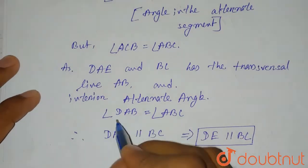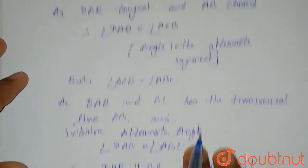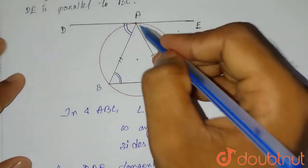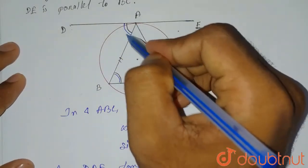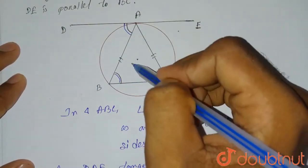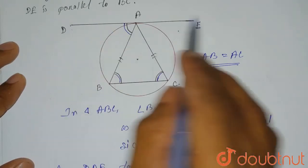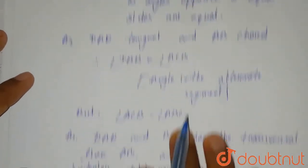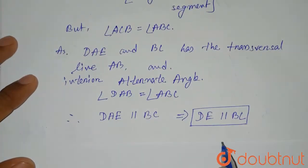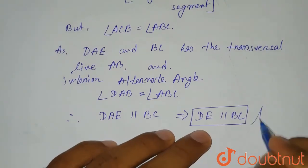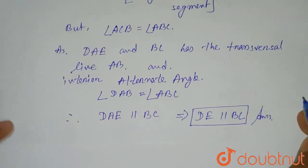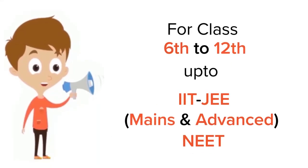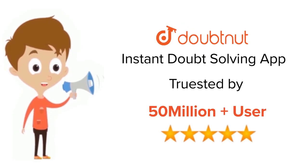How did we prove that? Whenever there is a transversal line and two lines passing by, if the transversal makes two interior alternate angles that are equal, then the necessary condition is these two lines will be parallel. So DE is parallel to BC. This is the required solution. Thank you. For Class 6 to 12, JEE and NEET level, trusted by more than 5 crore students.